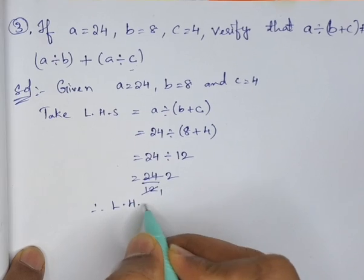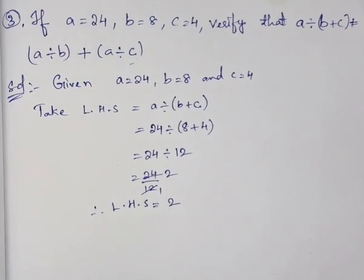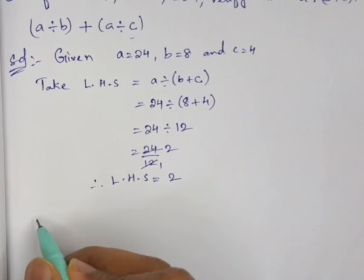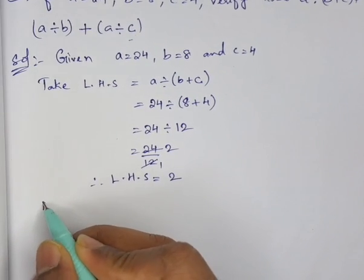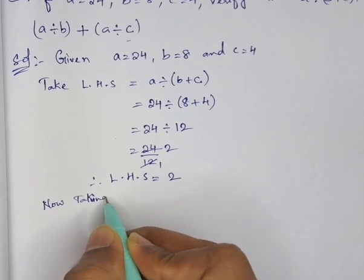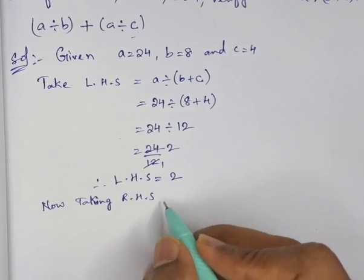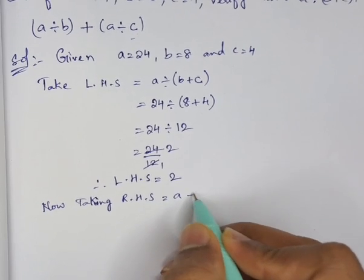Therefore we got LHS as 2. Now we will take RHS. Now taking RHS, what is RHS? This is a divided by b plus a divided by c.